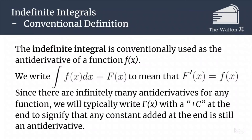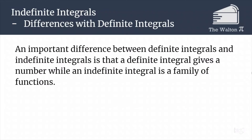Since there are infinitely many antiderivatives for any function, we write big F of x with a plus C at the end. That plus C signifies that we are adding a constant, and adding any different constant gives us the same derivative, providing the set of all functions that are antiderivatives of our original function. An important difference to remember is that a definite integral gives us a number, whereas an indefinite integral gives us a family of functions.